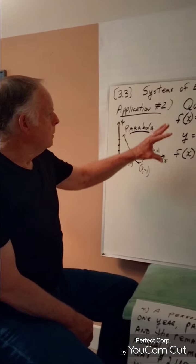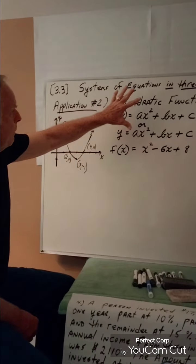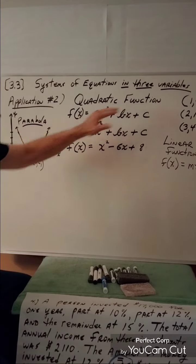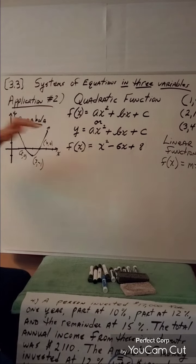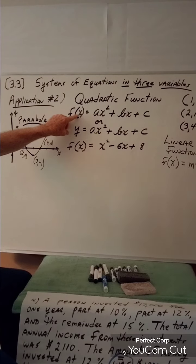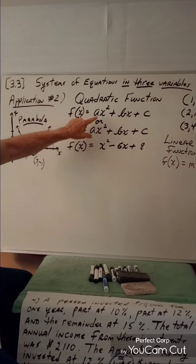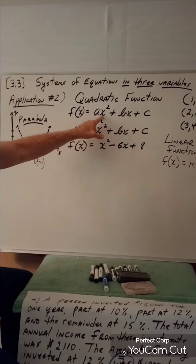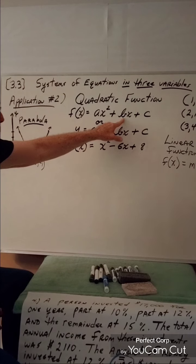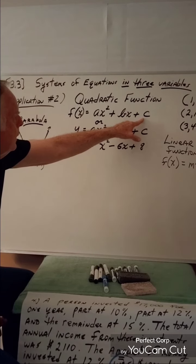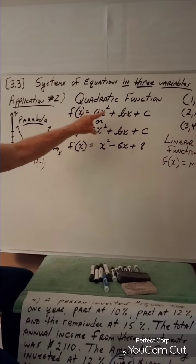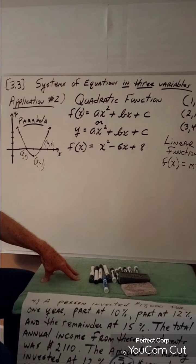The standard form of a quadratic function is f(x) = ax² plus bx plus c. There's the quadratic term, the linear term, and the constant term. This is the standard form of a quadratic function.